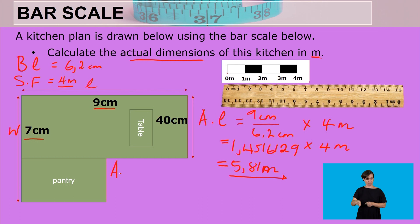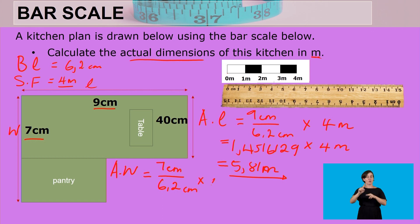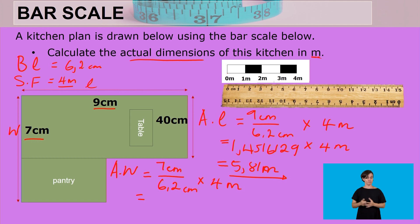Now for the actual width: the measured width is 7 centimeters, divided by the balance of 6.2 centimeters, multiplied by the scale factor of 4 meters. So we calculate 7 divided by 6.2, then multiply by 4.